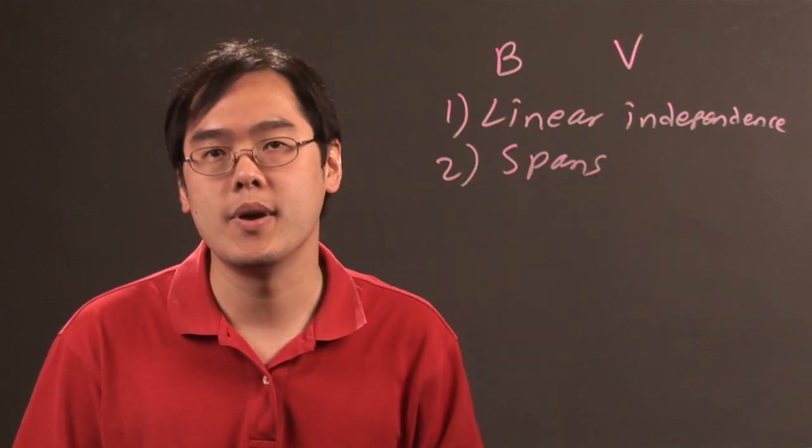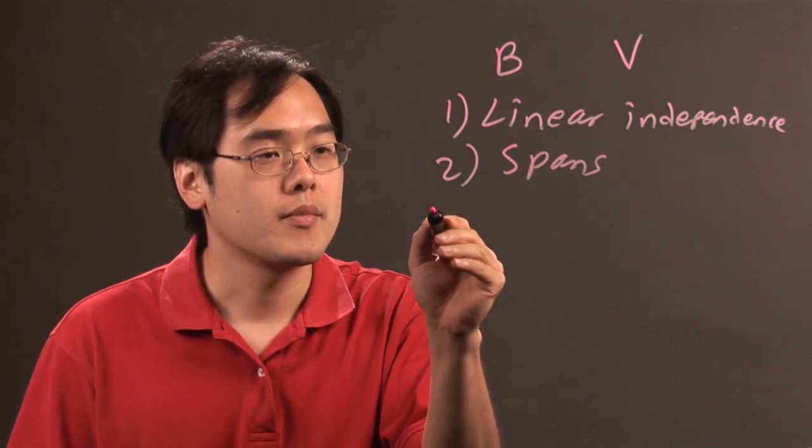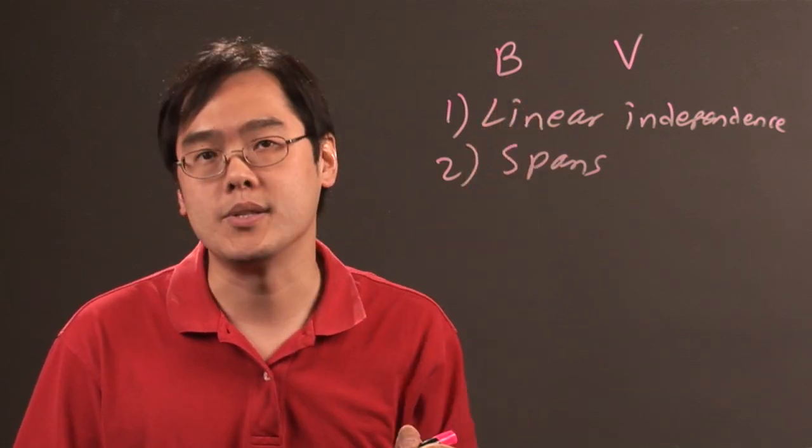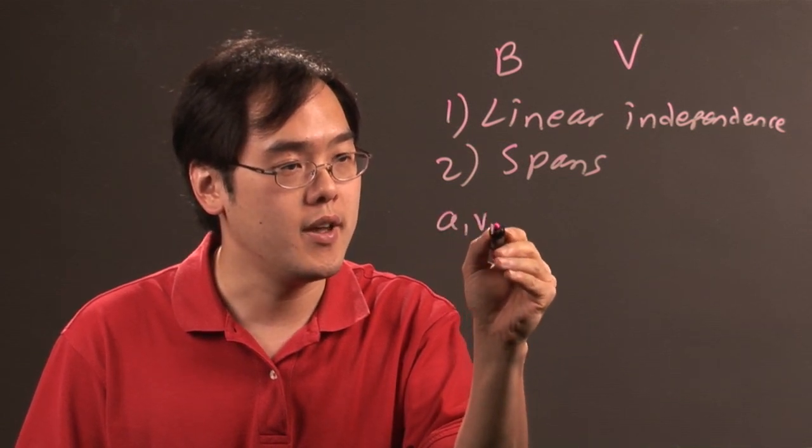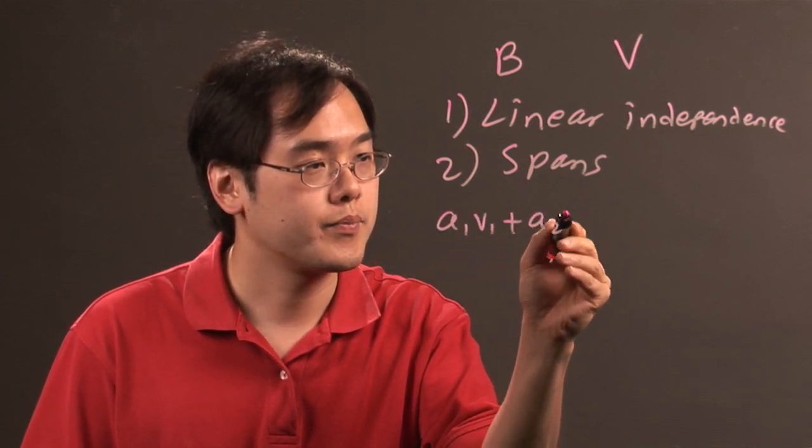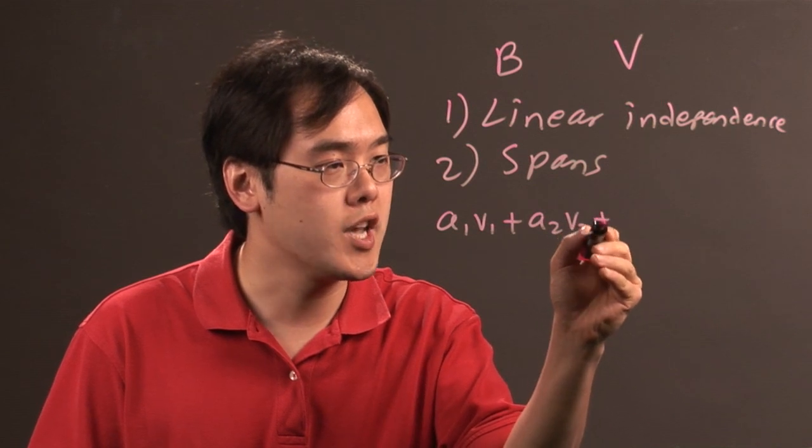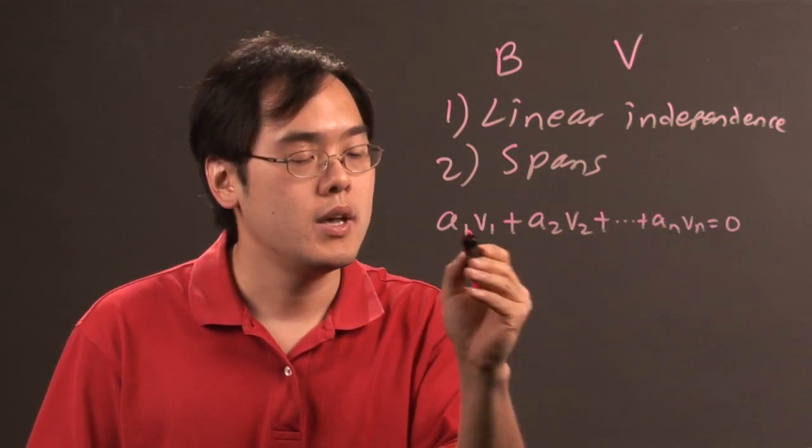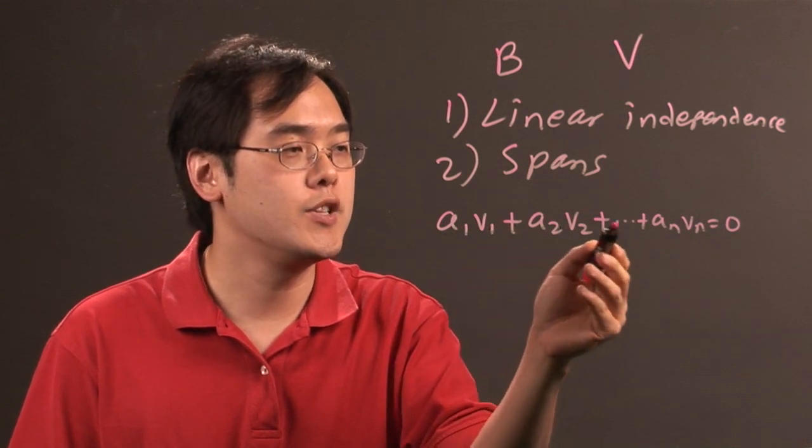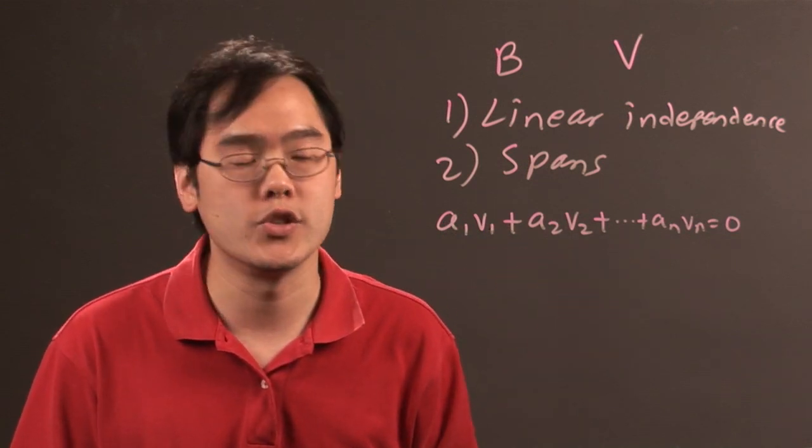The idea here is that if you have a series of elements in the potential basis, then the only way that this equation can be true: a₁v₁ plus a₂v₂ plus ... plus aₙvₙ equals zero,